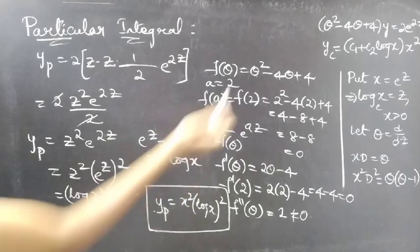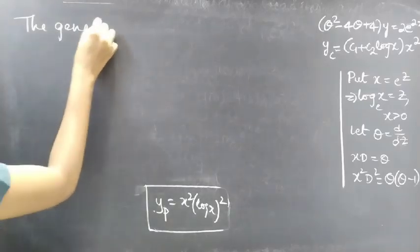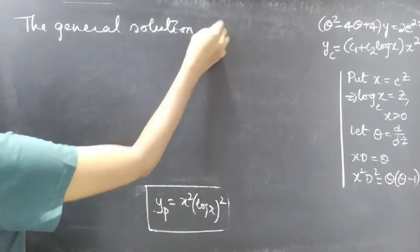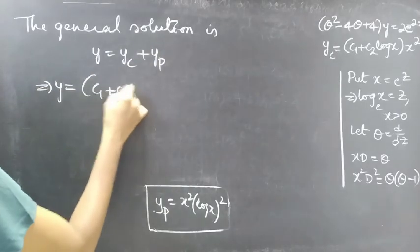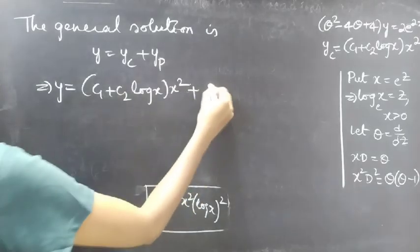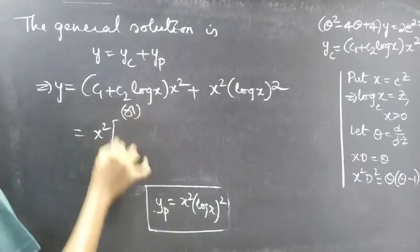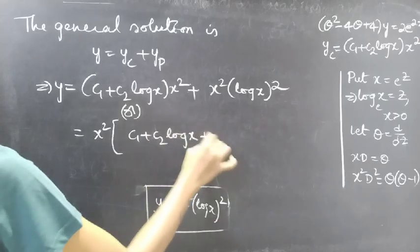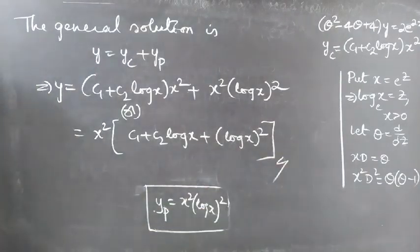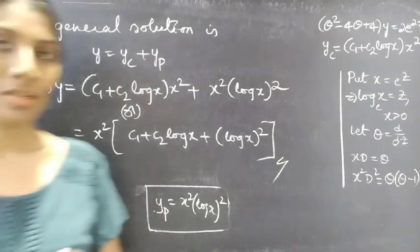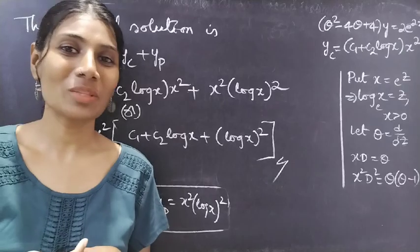Now we have both yp and yc. The general solution is y equals yc plus yp, which gives y equals (c1 + c2·log x)·x² + x²·(log x)², or x²·[c1 + c2·log x + (log x)²]. This completes the problem. We have seen a problem from higher-order linear differential equations with variable coefficients. Hope you understand — see you in the next video. Bye-bye.